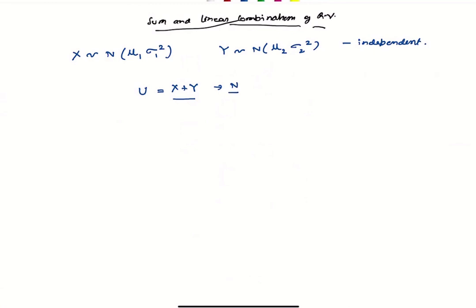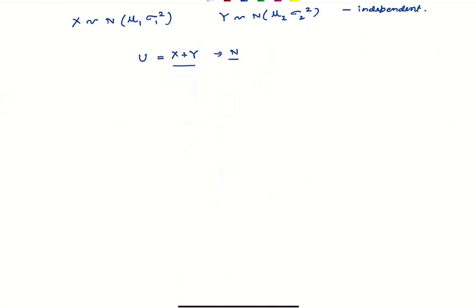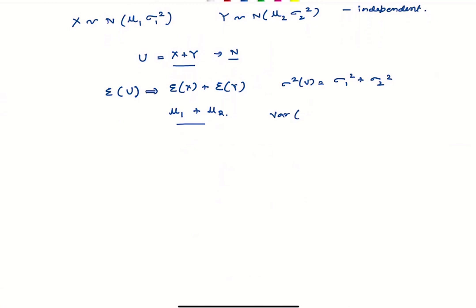That is an important property of a normal distribution: the sum of two normal distributions is also going to be normal. The expected value of u is going to be the sum of the expected values of x and y, which are mu1 and mu2. The same applies for the variance: the variance of u is also going to be the sum of sigma1 square and sigma2 square.